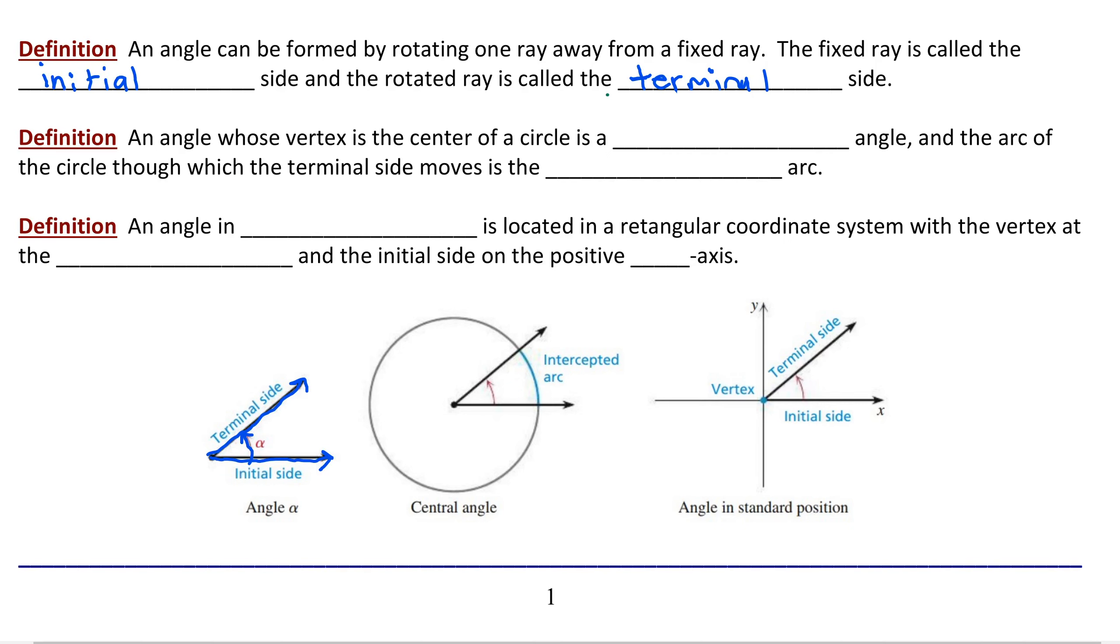Sometimes we study angles as they relate to circles. An angle whose vertex is the center of a circle is called a central angle. And the arc of the circle through which the terminal side moves—so imagine your initial side and rotating that angle through, rotating that ray through the angle—the arc that is intercepted on the circle is called the intercepted arc. Very straightforward.